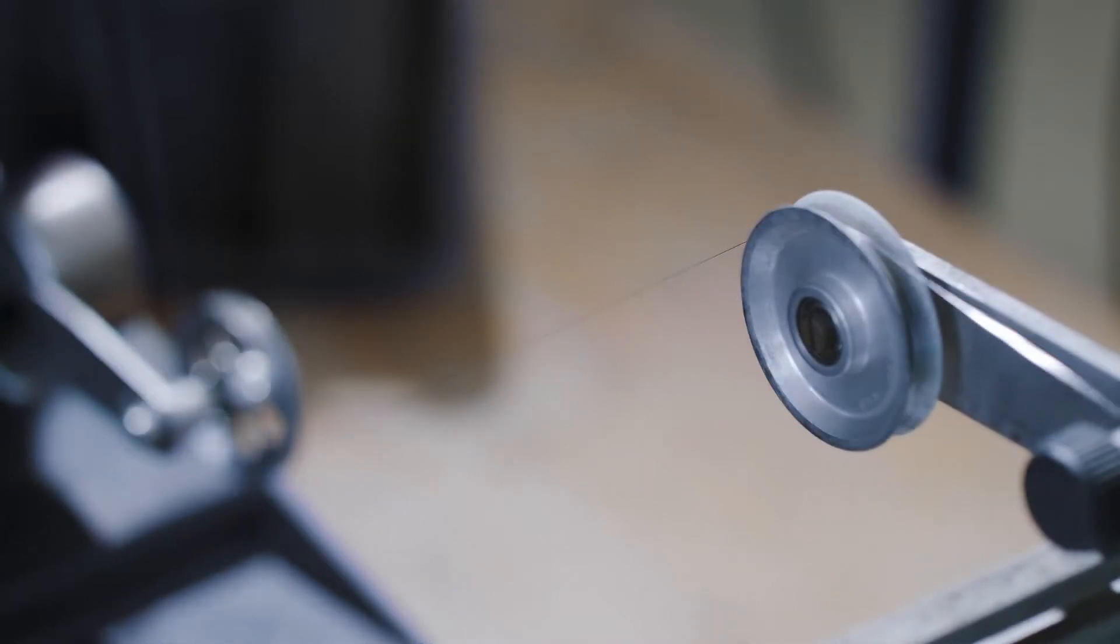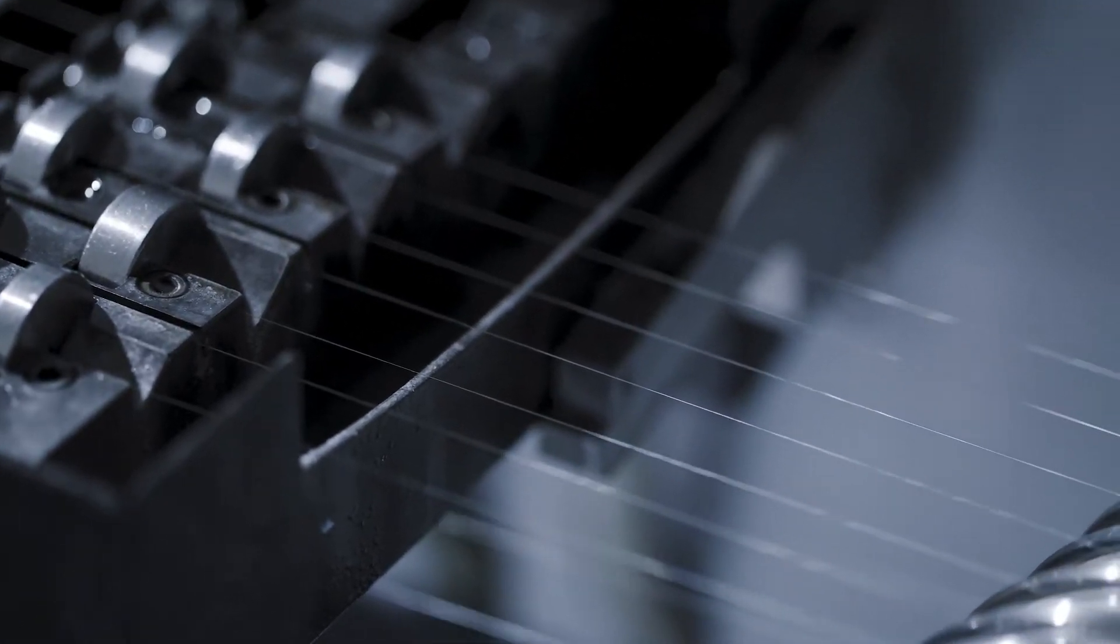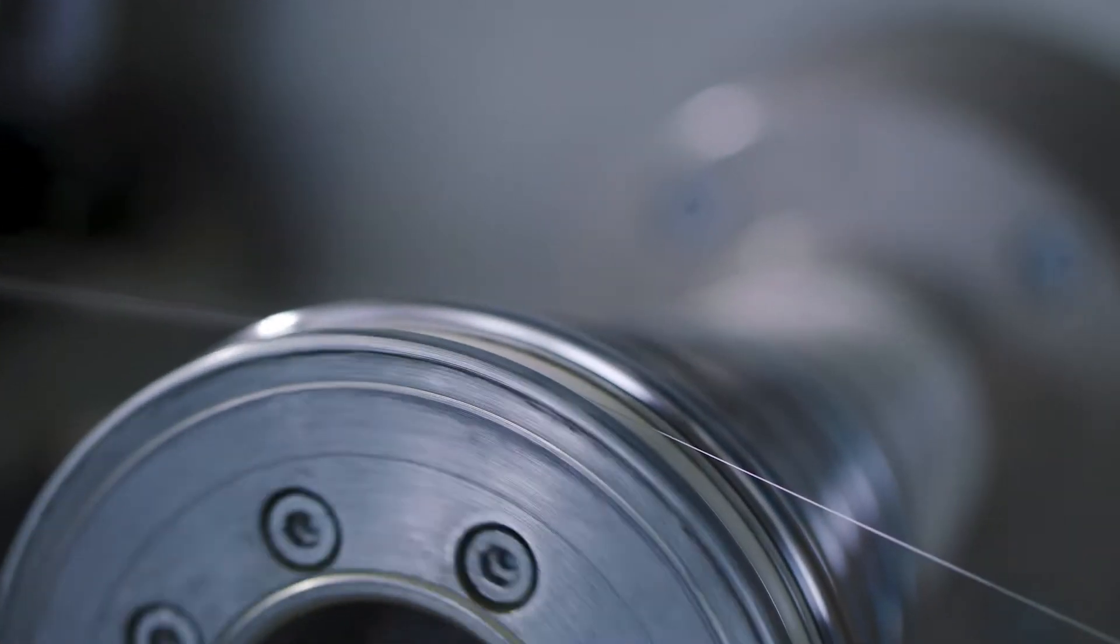The wire is further reduced in diameter by pulling it through drawing dies. With laser controls, we ensure the precise thickness of down to 60 micrometers, which is approximately the thickness of a human hair.